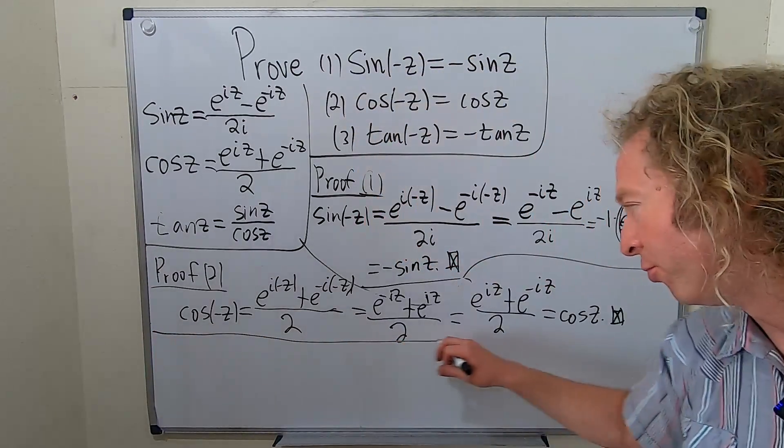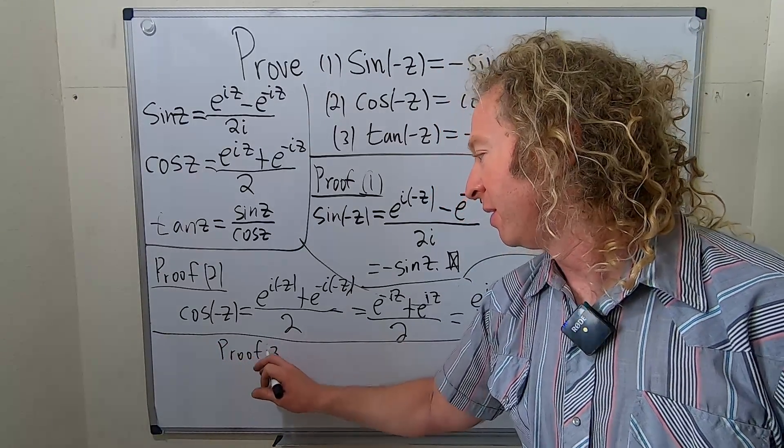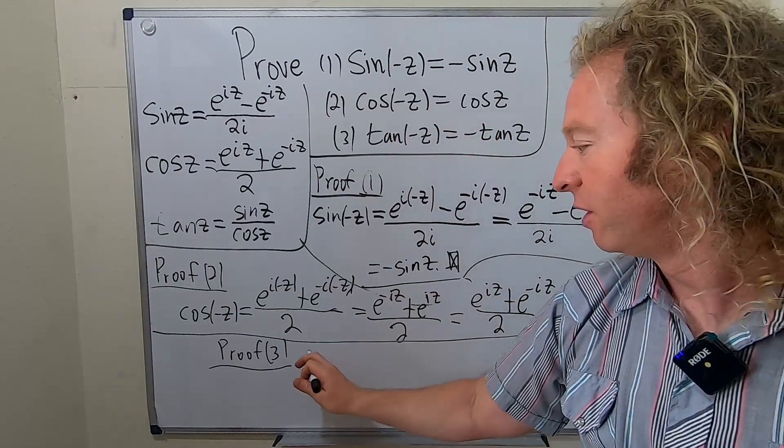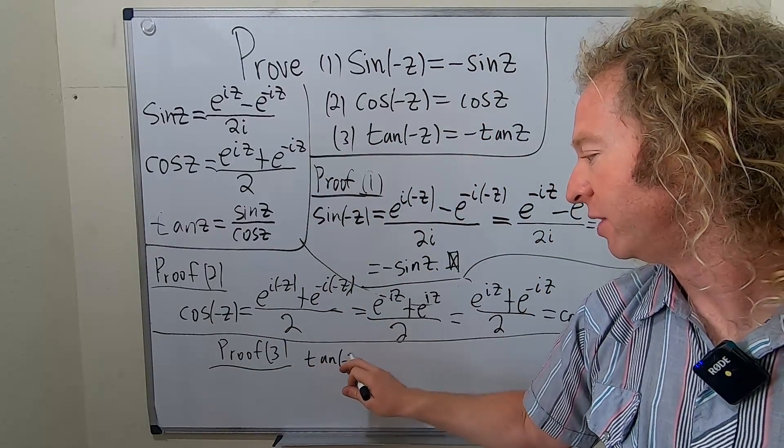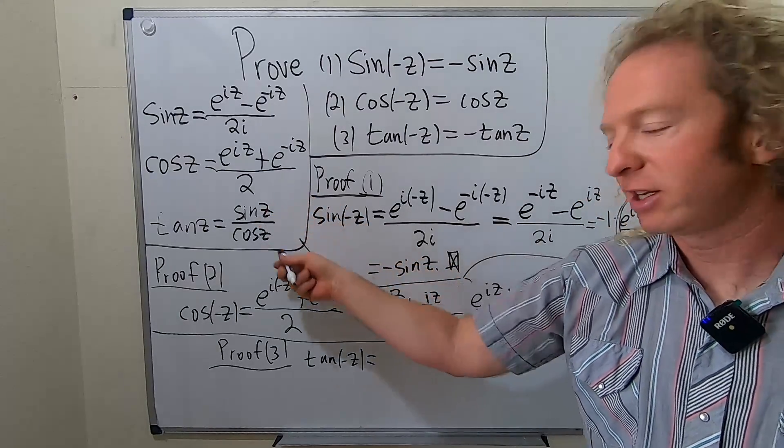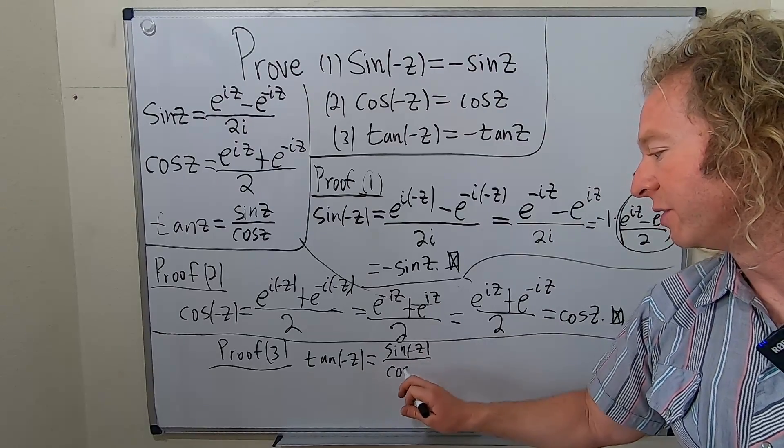Let's do proof three. I think this one should follow - my plan is to use the previous two to do this one. So tangent of negative z. Let's use the definition of tangent. So it's sine of negative z over cosine of negative z.